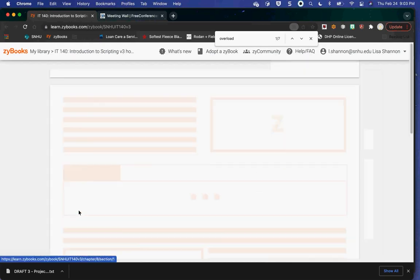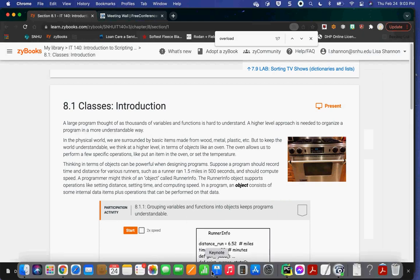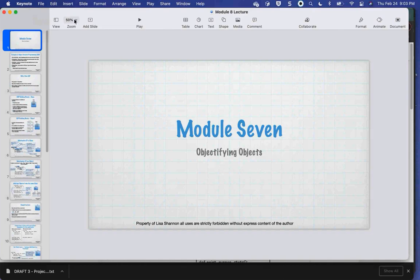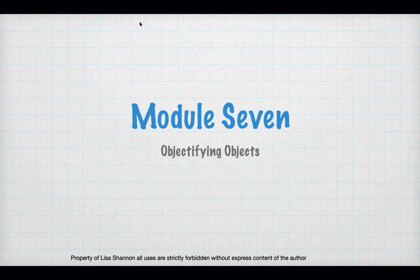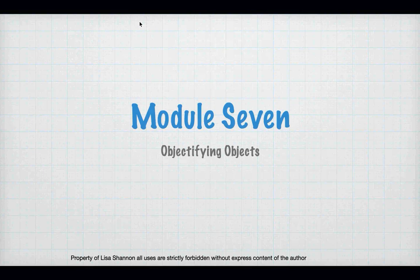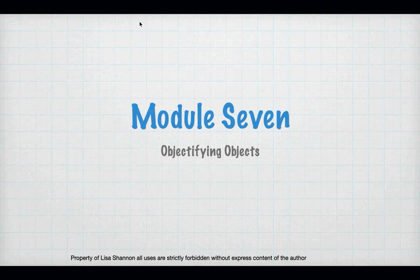What we're really doing here is we are introducing object-oriented programming in this class. There are two basic underlying methods for programming: there's functional, and there's object-oriented. Languages like Java are object-oriented. Languages like C are functional — it doesn't have the concept of a class.